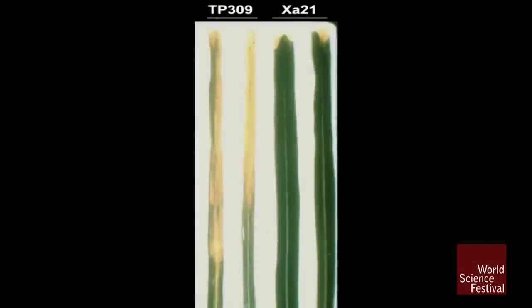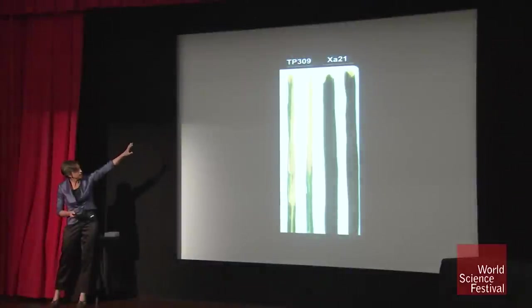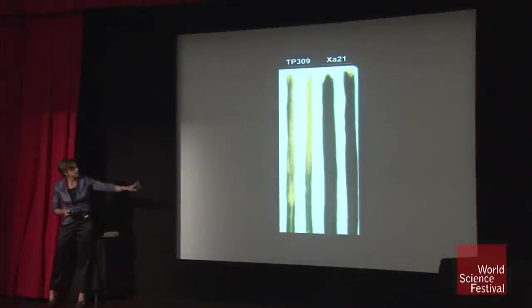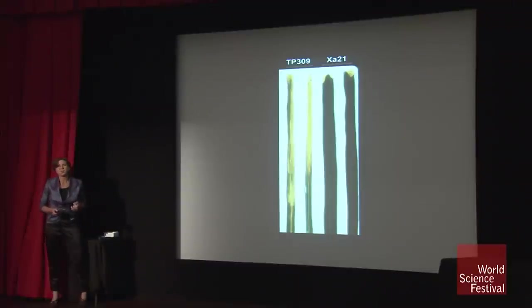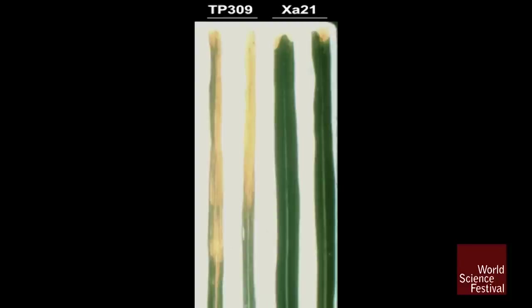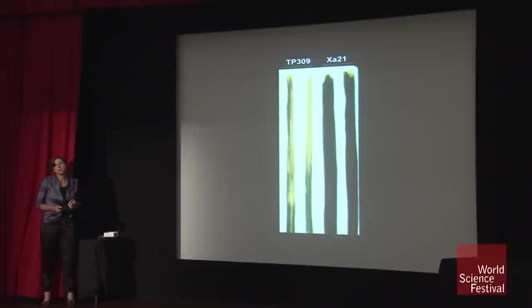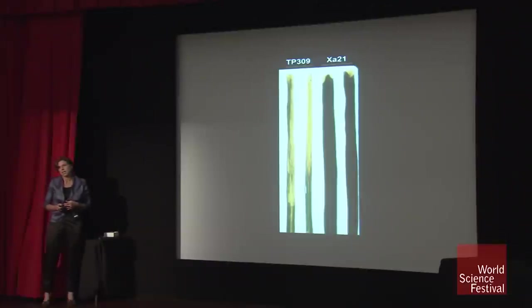That gene was called XA21. We isolated it and used genetic engineering to introduce it into rice plants. On the left are conventionally bred rice varieties — we take scissors, dip them into a bacterial suspension, clip the ends of the leaves, and wait 10 days. The rice lines on the left are very susceptible to the disease, while on the right is a genetically identical line engineered with XA21, which confers very robust resistance. This gene has now been introduced into many varieties using both genetic engineering and precision breeding.